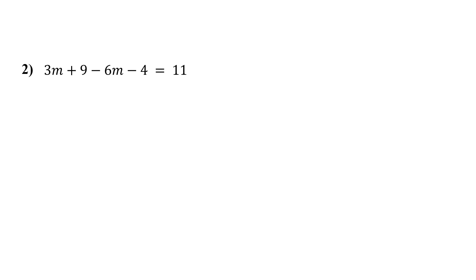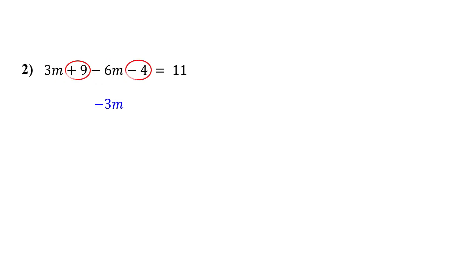On the left side of this equation, we have both variable and constant like terms. Let's start by combining the variable like terms. 3m minus 6m gives us negative 3m. Now combine the constants: 9 minus 4 is 5. Bring down the equals sign and 11. This is now a two-step equation.